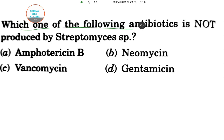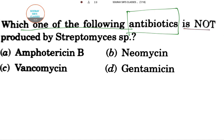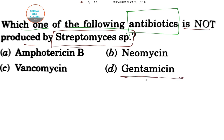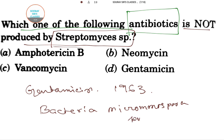Moving to the next question: which one of the following antibiotics is not produced by Streptomyces species? Here are the options. The answer will be option D, that is gentamicin. Gentamicin was discovered in 1963 and is made from the bacteria Micromonospora purpurea.